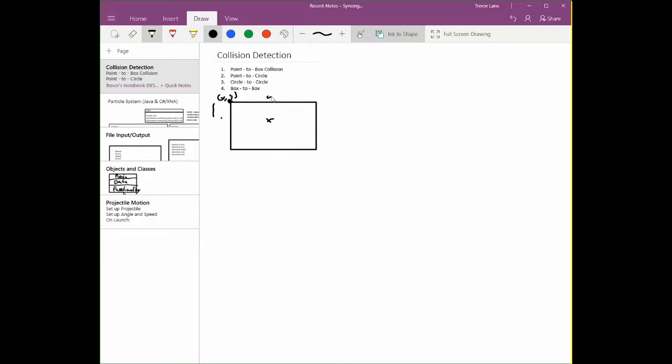So we know the box is defined by an x and y coordinate. We also know that it has a width and it has a height. The point that we clicked on is defined by an x and y coordinate. So we need to know if the x coordinate of the point exists between this wall and this wall.